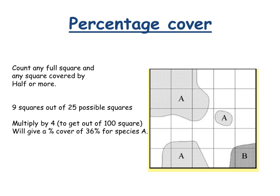Here's one that's not 100 squares — this one's a 5 by 5 grid. What you'd have to do is times it by 4 to get 100 squares, because at the moment you've only got 25. Counting species A: there are 9 squares covered. So that means there's only 9 out of 25 squares covered. If you times it by 4, you can find how many there are per 100 squares. So that means there is 36% for species A.